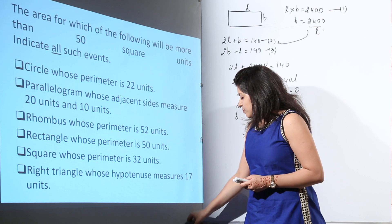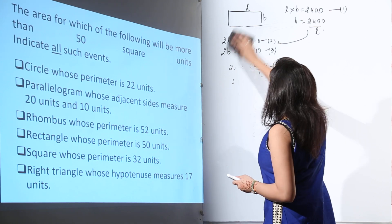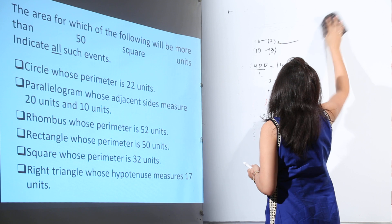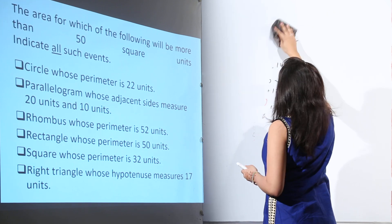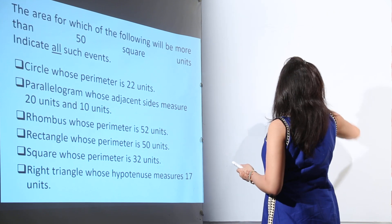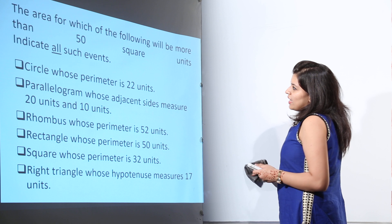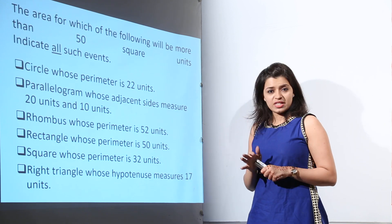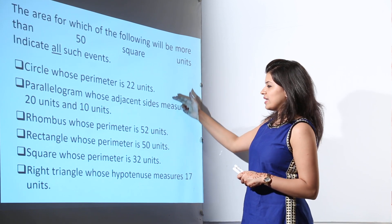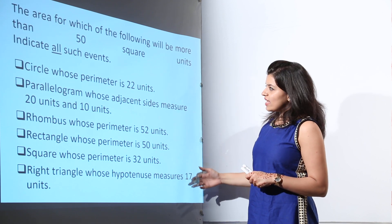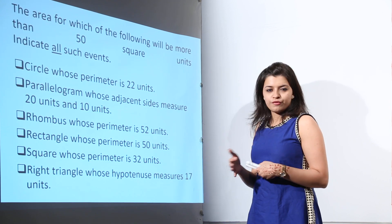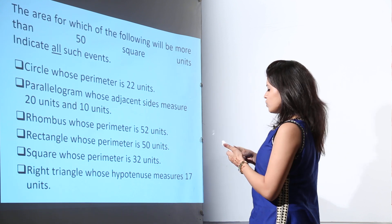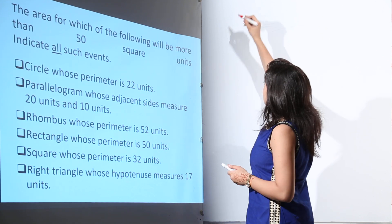Let us see another multiple choice question in which more than one option can be correct. We have to find the area for which of the following will be more than 50 square units. We have to calculate the area in all given cases and then see which of them is more than 50. Let us pick up the first case: a circle whose perimeter is 22 units.